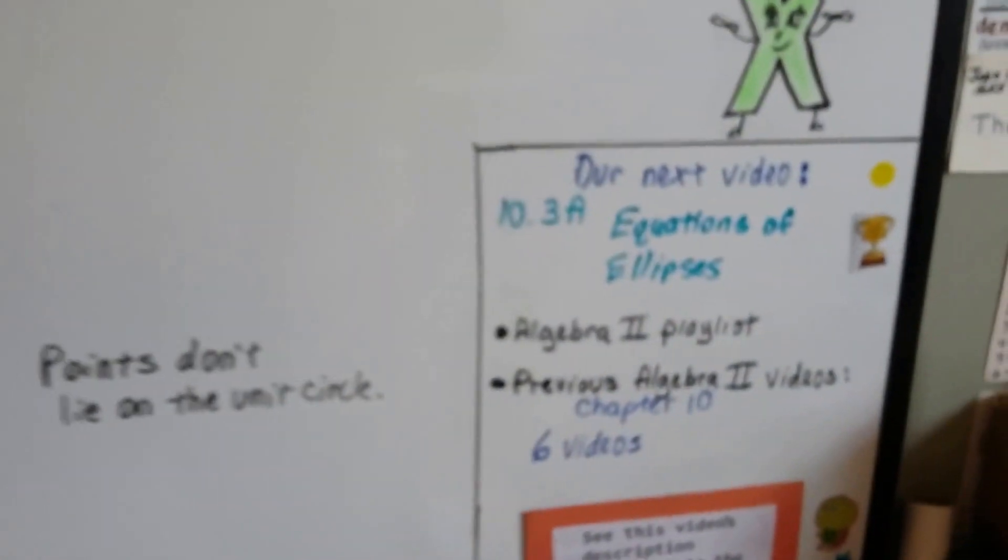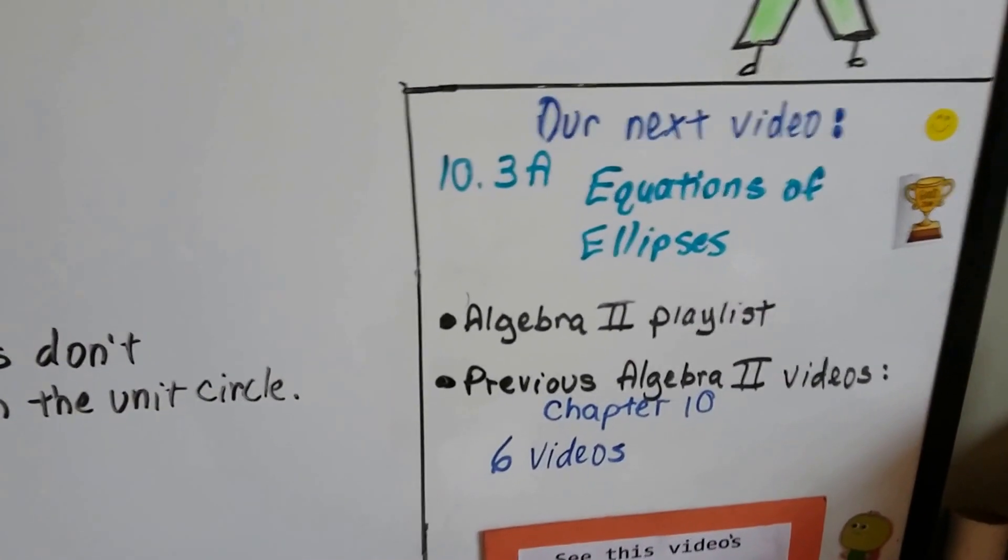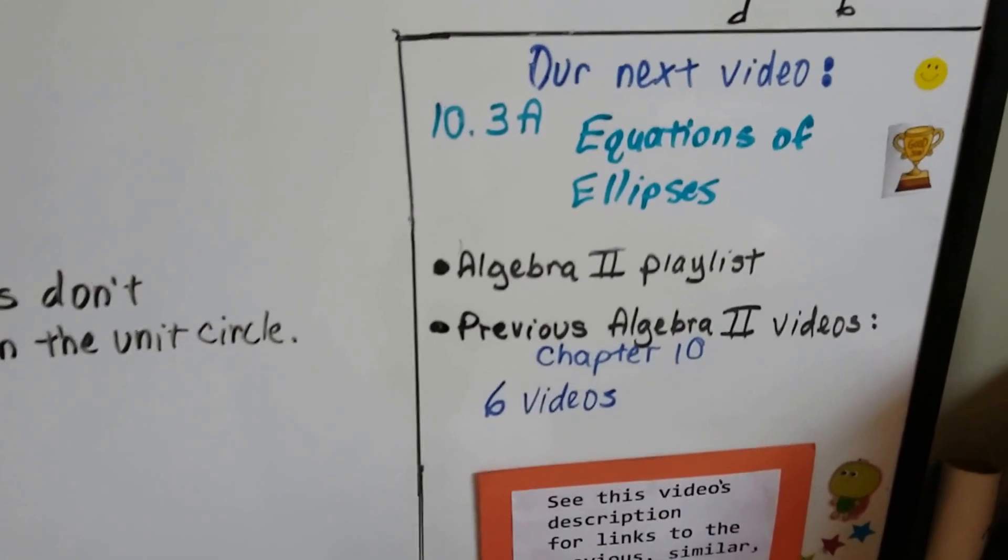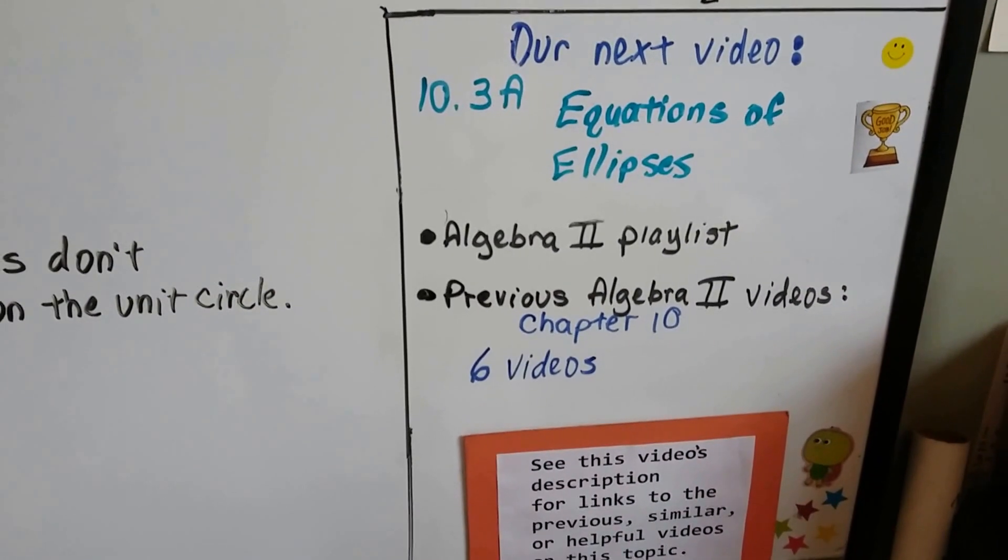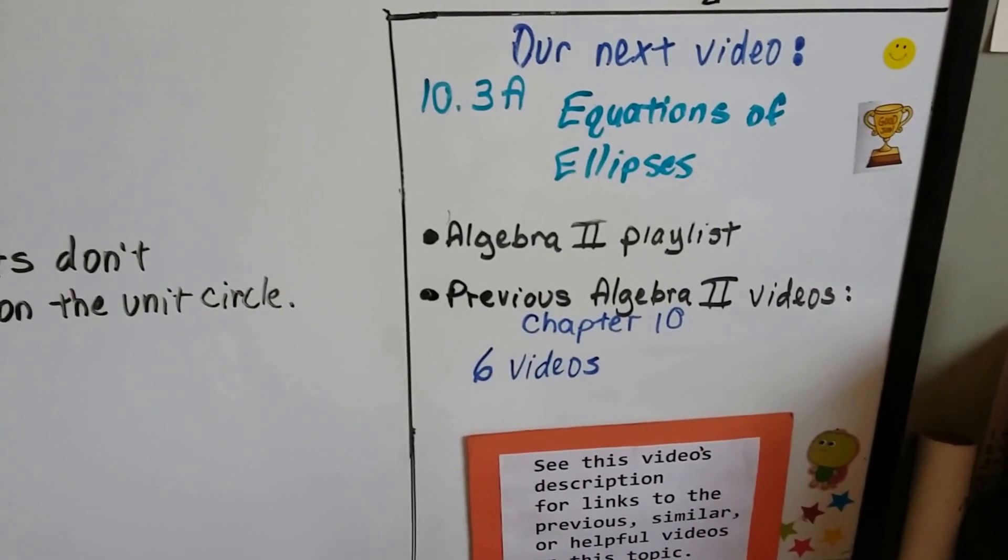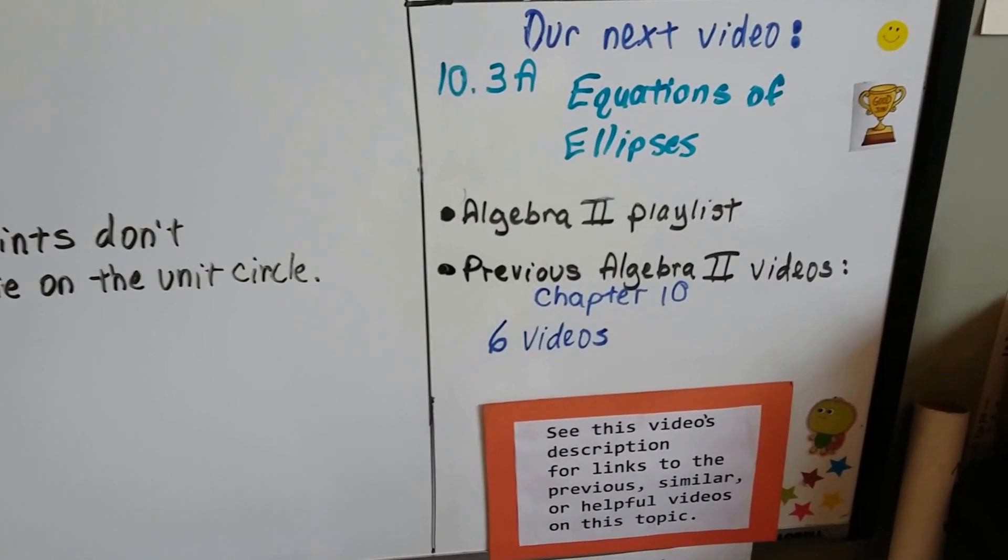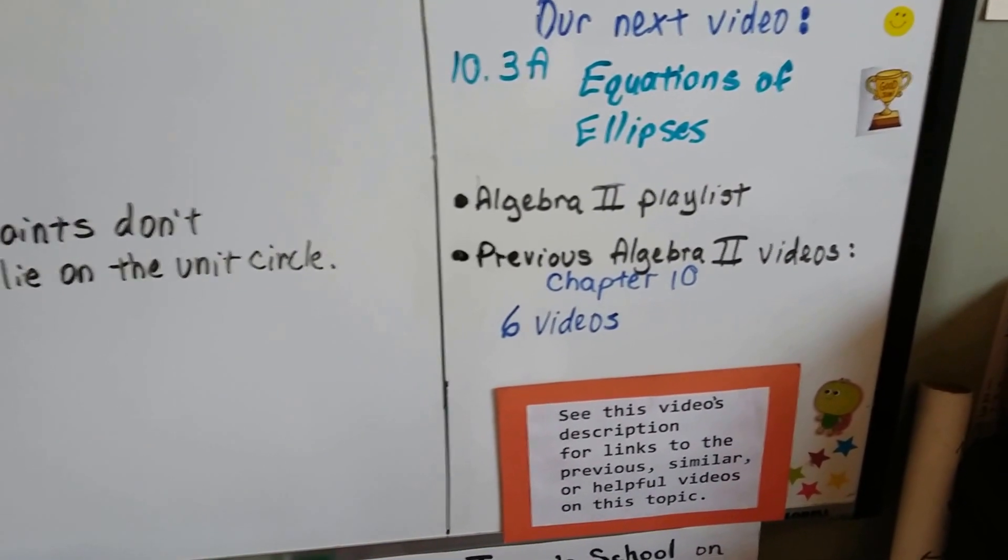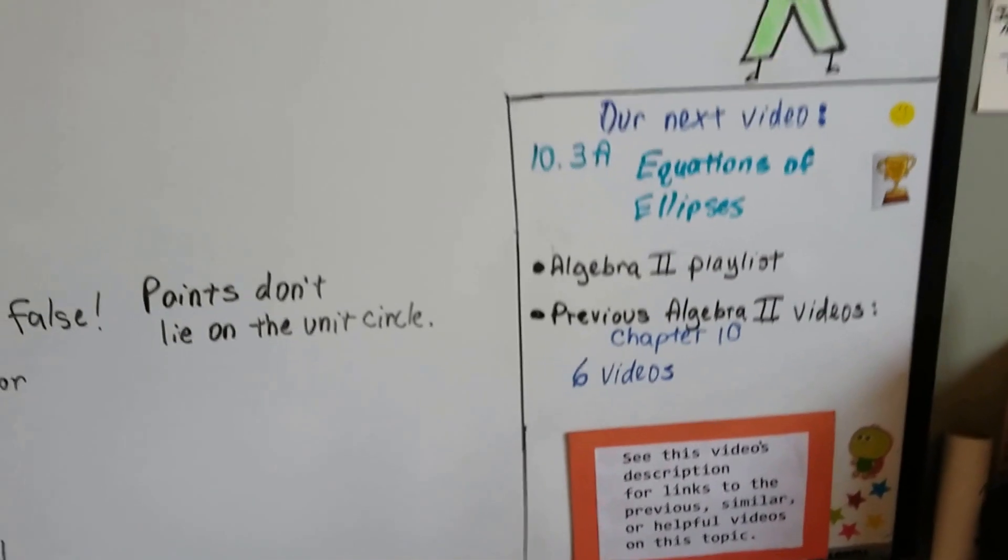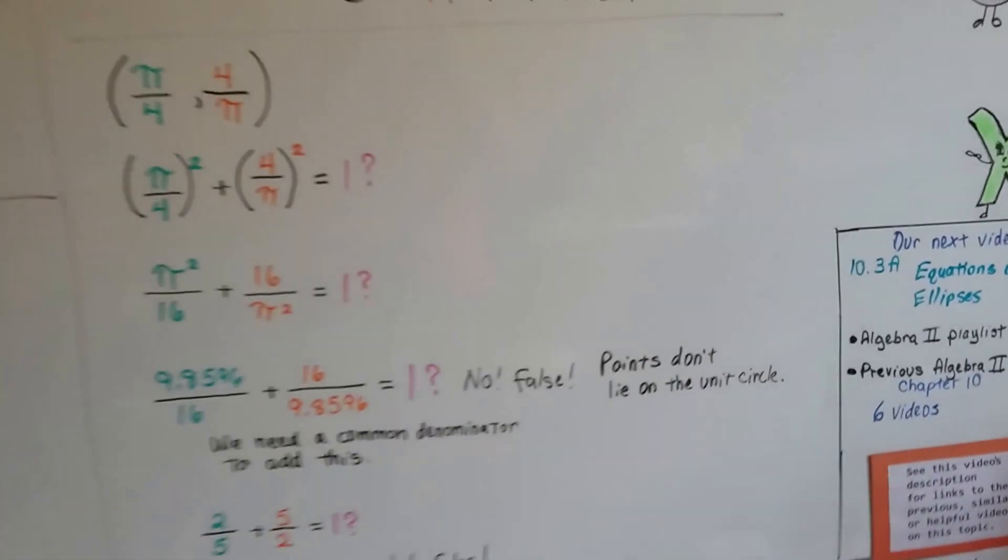Our next video is going to be 10.3a. We're going into a new unit for chapter 10. We're going to talk about the equations of ellipses. So, we did circles. Now, we're going to do ellipses. And, I'm going to add this video to the Algebra 2 playlist, and there's going to be a link to those previous six videos for chapter 10, so you can watch them.